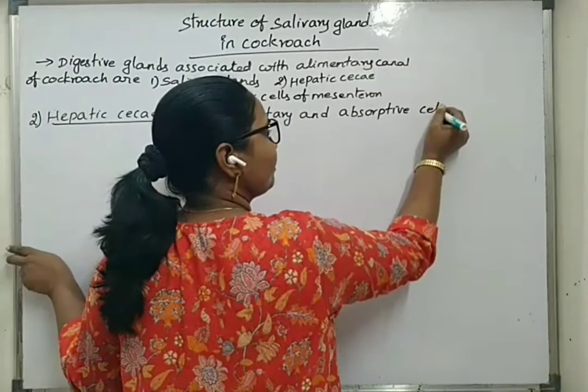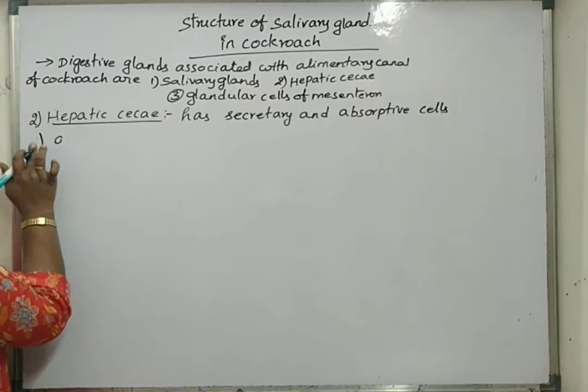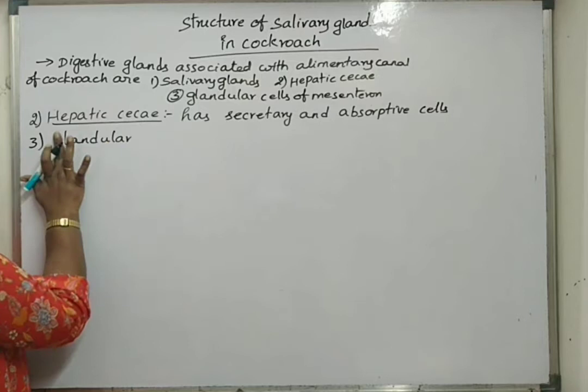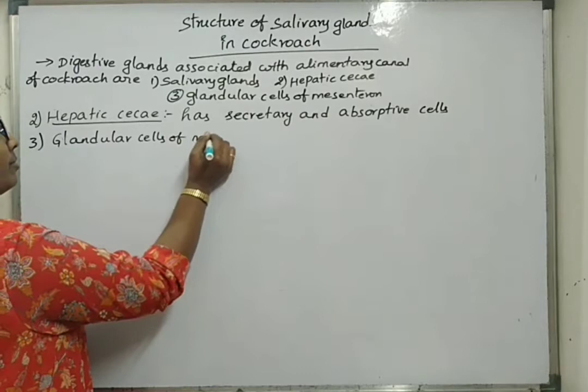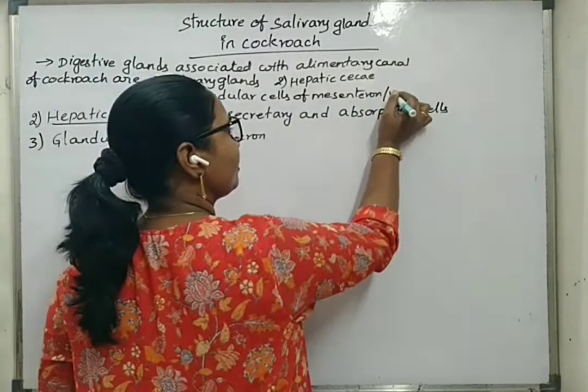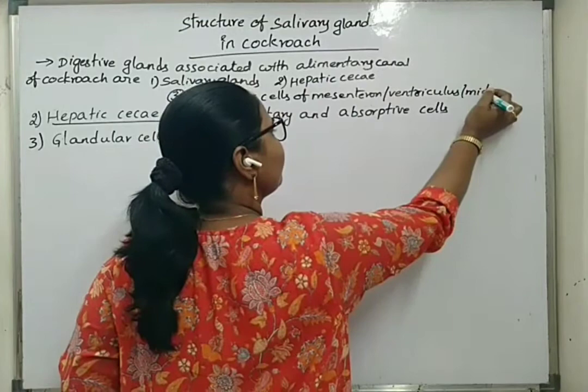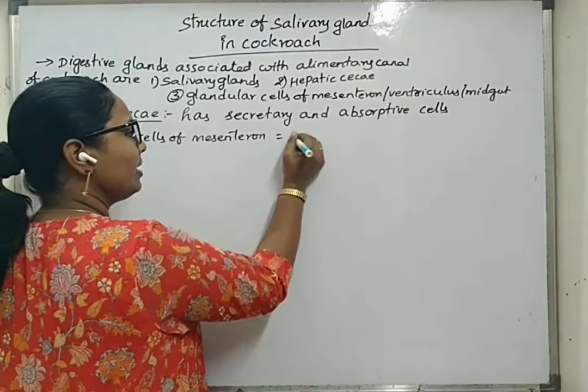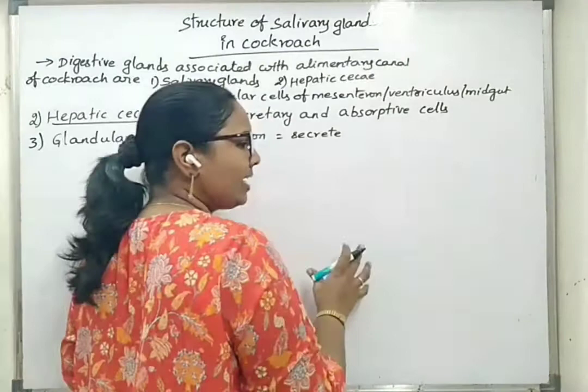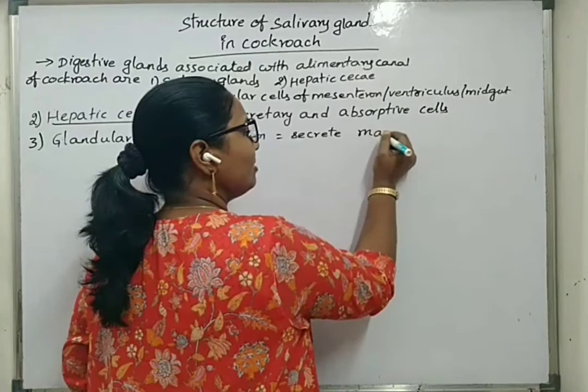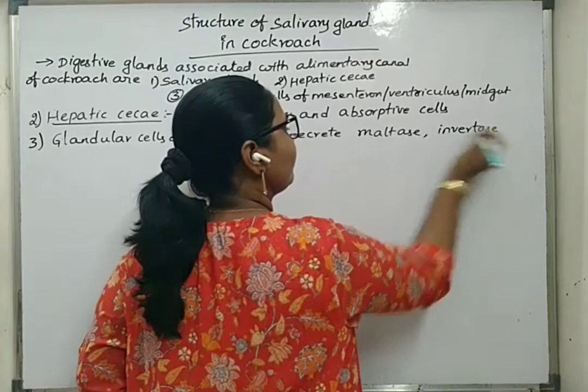The third type is glandular cells of mesenterone, also called ventriculus or midgut. The glandular cells of mesenterone secrete amylase, maltase, invertase, proteases, and lipases.